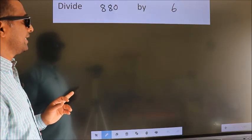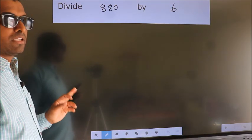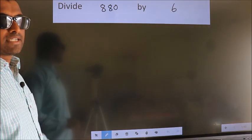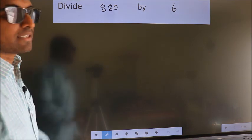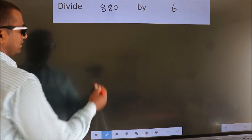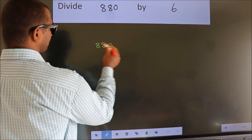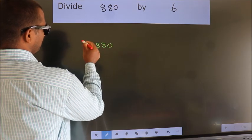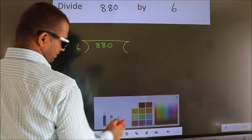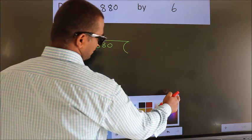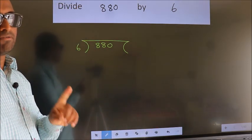Divide 880 by 6. To do this division, we should frame it in this way: 880 here, 6 here. This is your step 1.